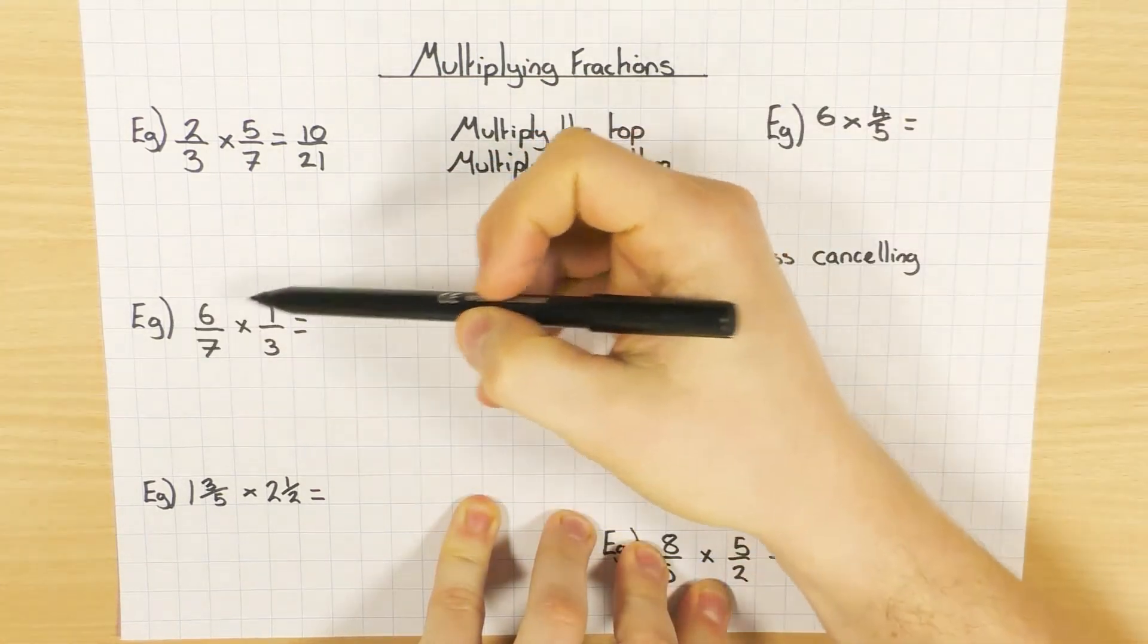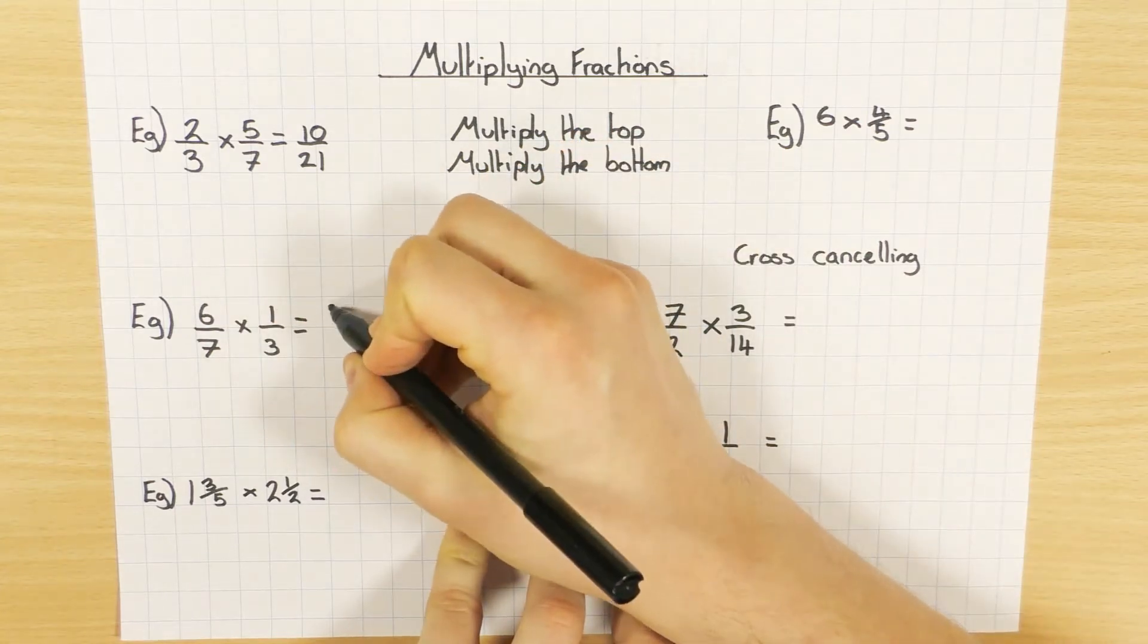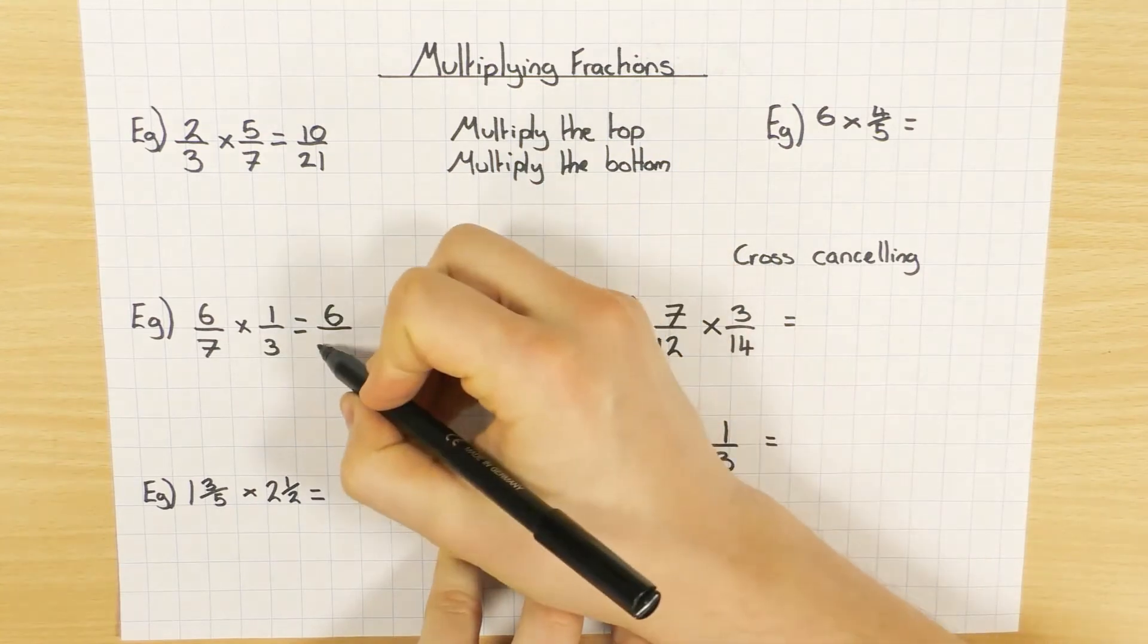Next example, exactly the same thing, times the top numbers, so 6 times 1 is 6. Bottom, 7 times 3 is 21.